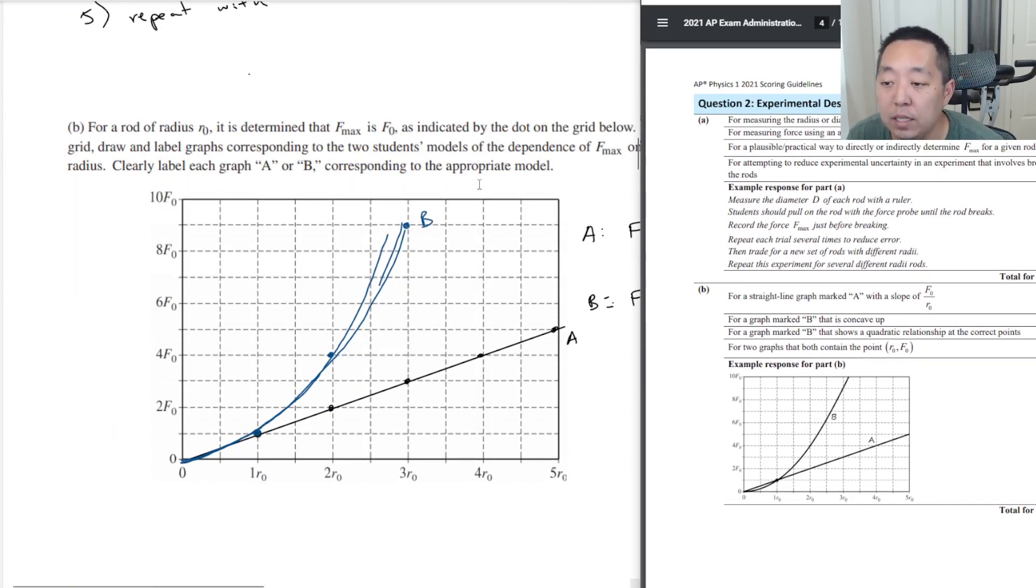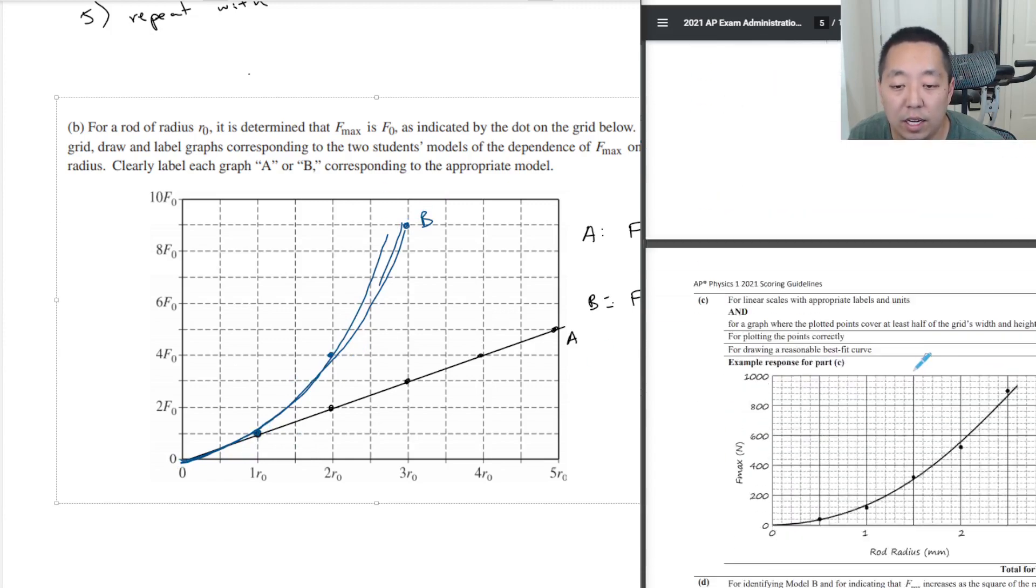Design experimental procedure. Here's where I wrote the experimental procedure. I did a bunch of things. I think in general it's pretty flexible on this. As long as you meet these criteria, then you would have gotten full credit for that. For B, they wanted a straight line graph marked A, that's what we have here. For graph B marked B that is concave up, graph B that shows quadratic relationship at the correct points. For two graphs that contained the point R₀, F₀. I put the dot there, the solid dot there. I did put a solid dot right here.